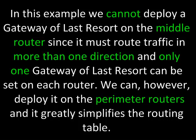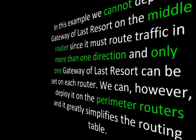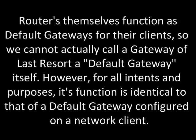In this example, we cannot deploy a gateway of last resort on the middle router since it must route traffic in more than one direction, and only one gateway of last resort can be set on each router. We can, however, deploy it on the perimeter routers, and it greatly simplifies the routing table. Routers themselves function as default gateways for their clients, so we cannot actually call a gateway of last resort a default gateway itself.